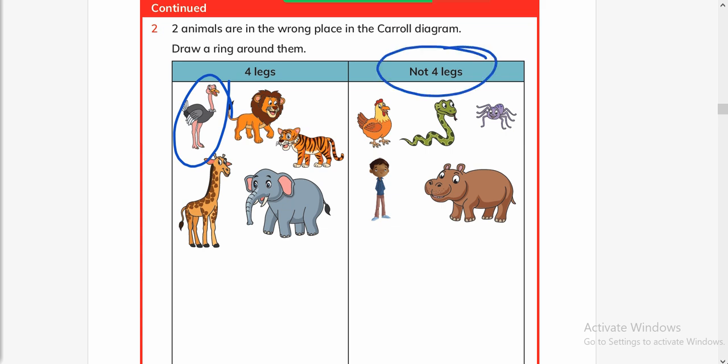Okay, now the next caption written here is 'not four legs'. Yes, it is not four legs, not four legs, not four legs - it has more than four legs but not four legs. But this animal has four legs, so we will circle him. Okay, so we have circled two animals which are at wrong places.